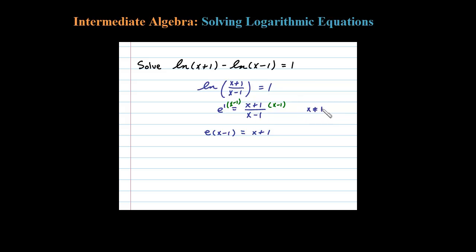Let's distribute the e - it's just a number like 2.71. So e times x minus e equals x plus 1. Now this is the trick: you want to get all your variables on one side and your numbers on the other side.